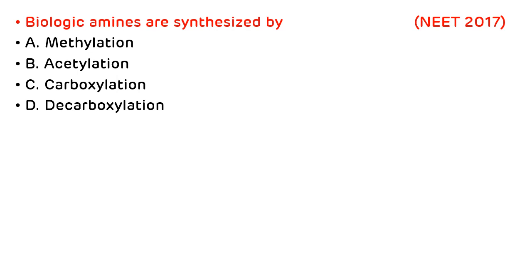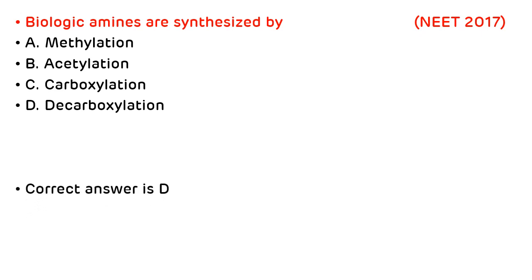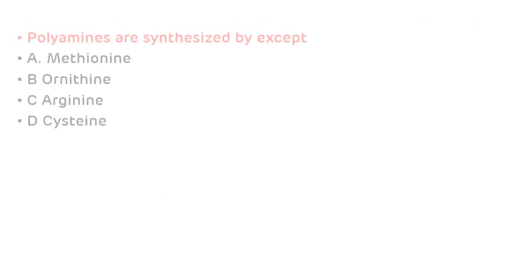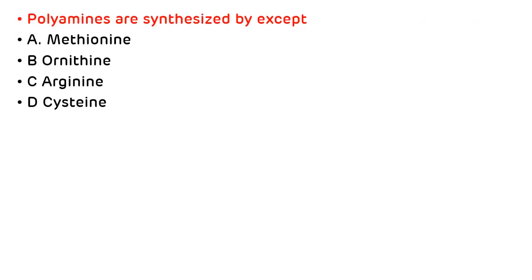Now, multiple choice questions from various entrance examinations. The first question was asked in NEET 2017: biological amines are synthesized by (a) methylation, (b) acetylation, (c) carboxylation, or (d) decarboxylation reaction. We have seen that biological amines are synthesized by PLP-dependent decarboxylation reaction, so the correct answer is (d) decarboxylation, meaning removal of carbon dioxide.